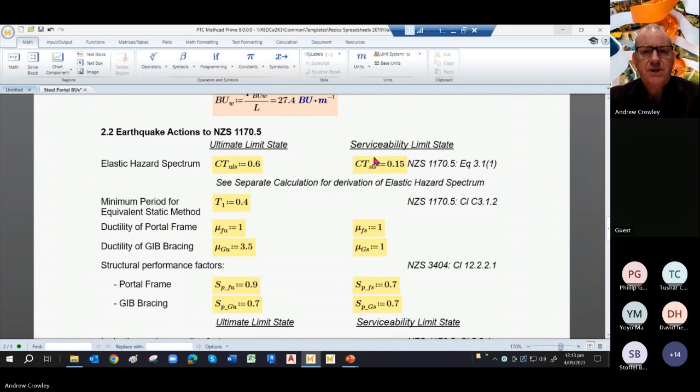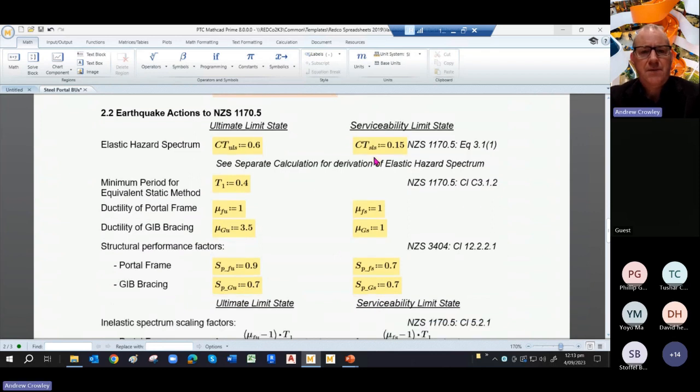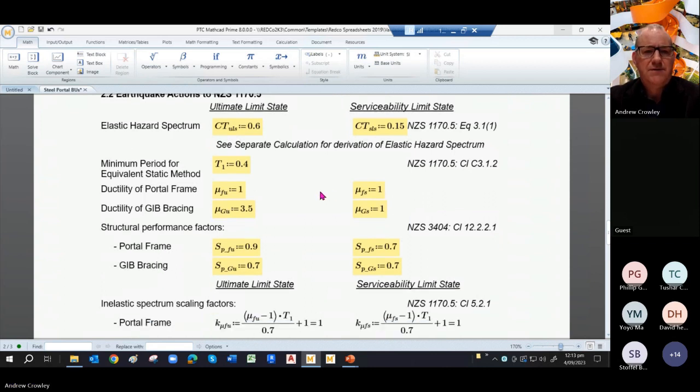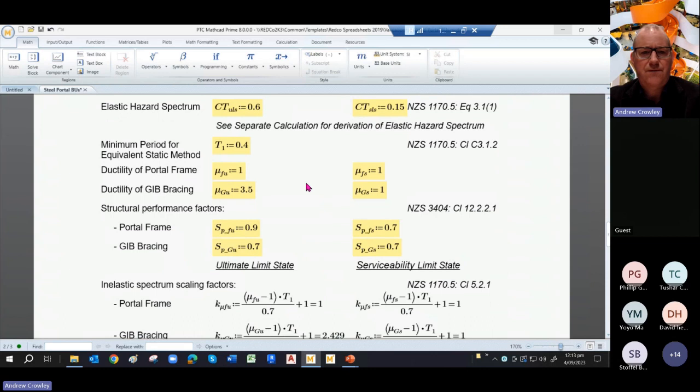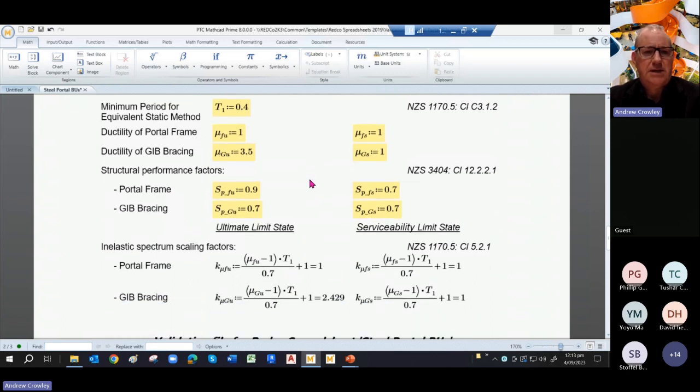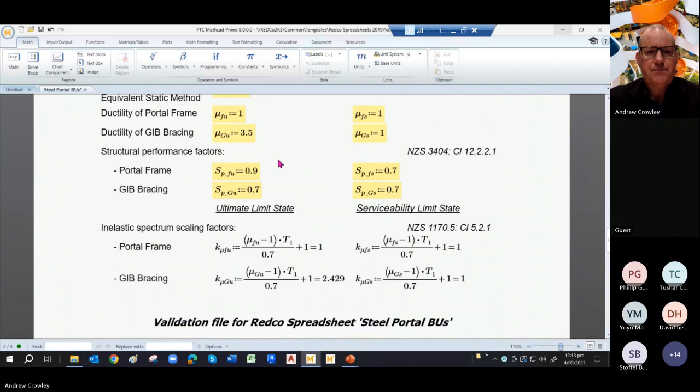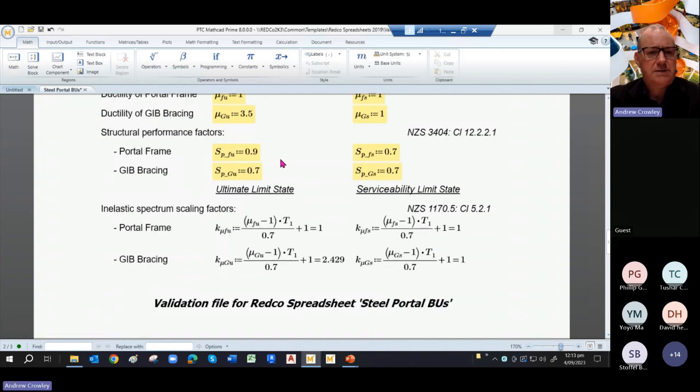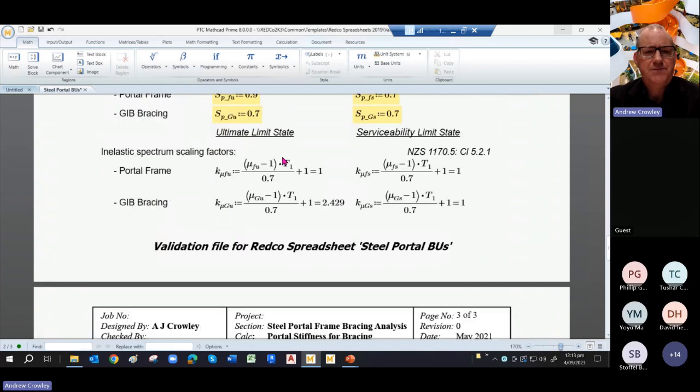So that's our wind. Coming to the earthquake, we calculated the elastic hazard spectrum at both SLS and ULS from a different calculation. Again, it's a different part of the spreadsheet. We've assumed a period of 0.4 and here's our ductility for the portal frame and the JIB bracing. So from that we get our seismic performance factors, 0.9 and 0.7 respectively.